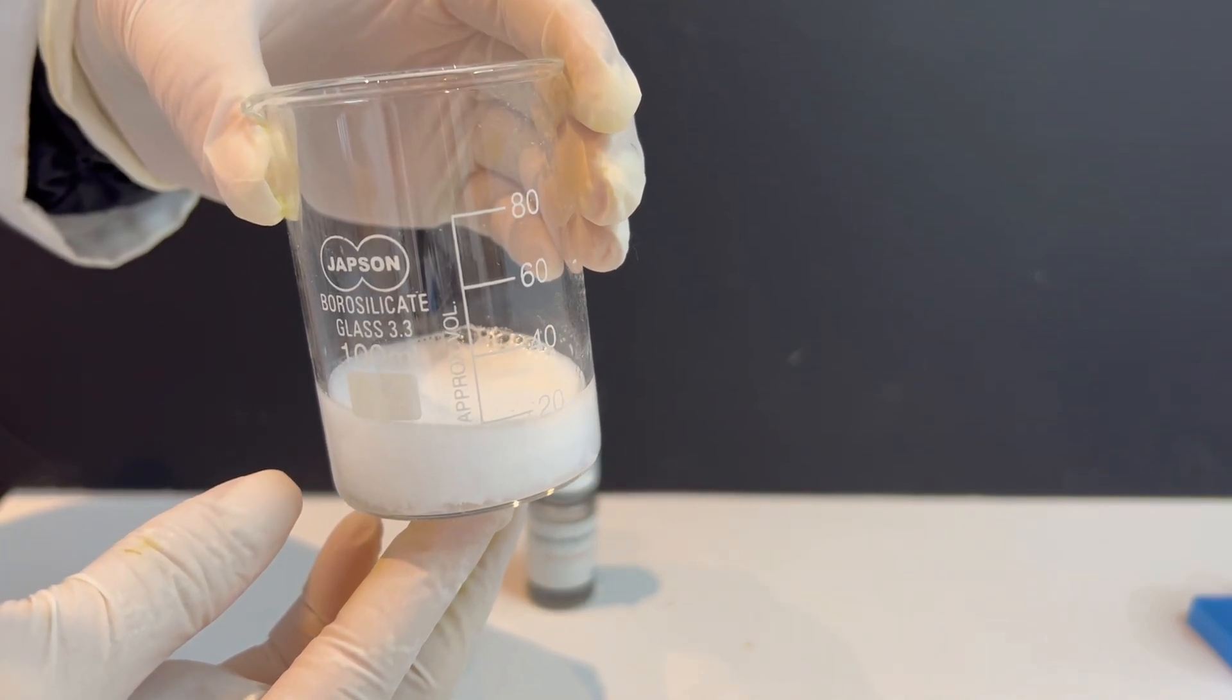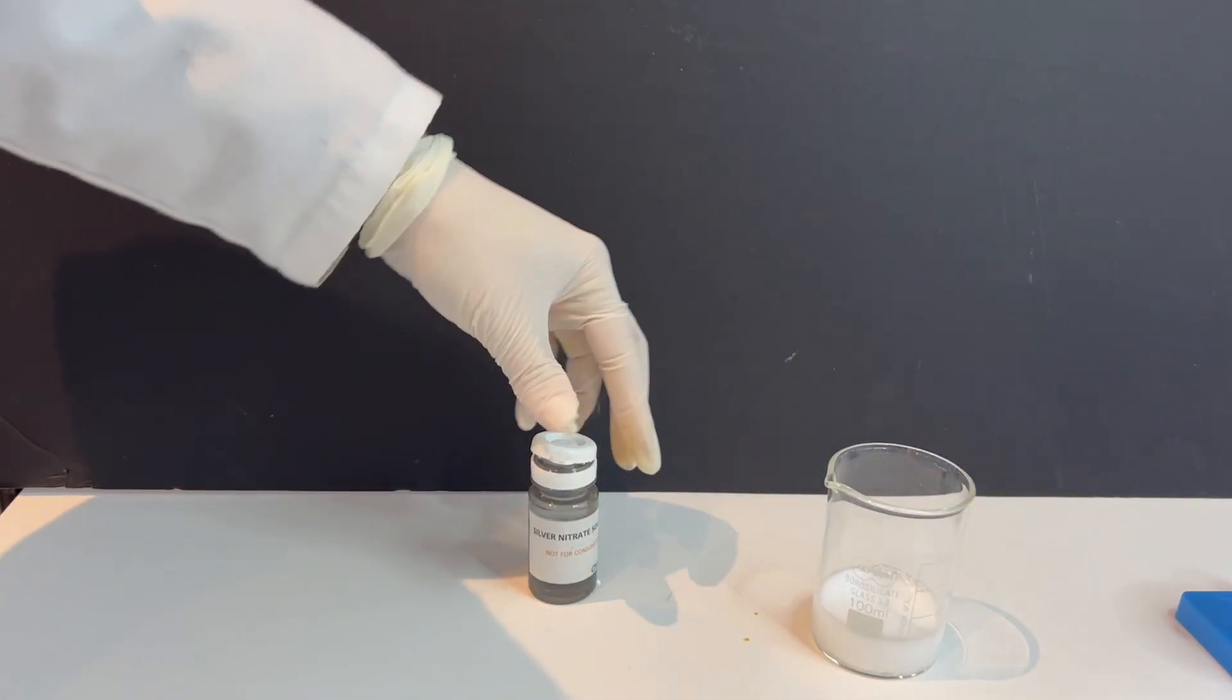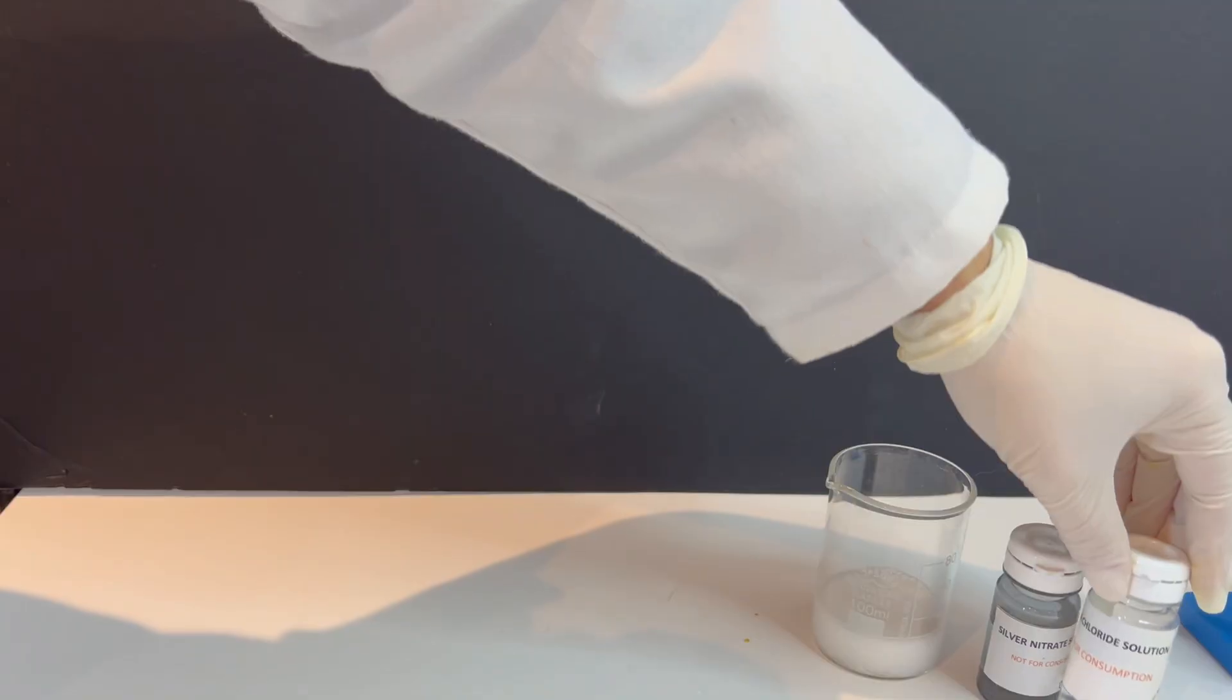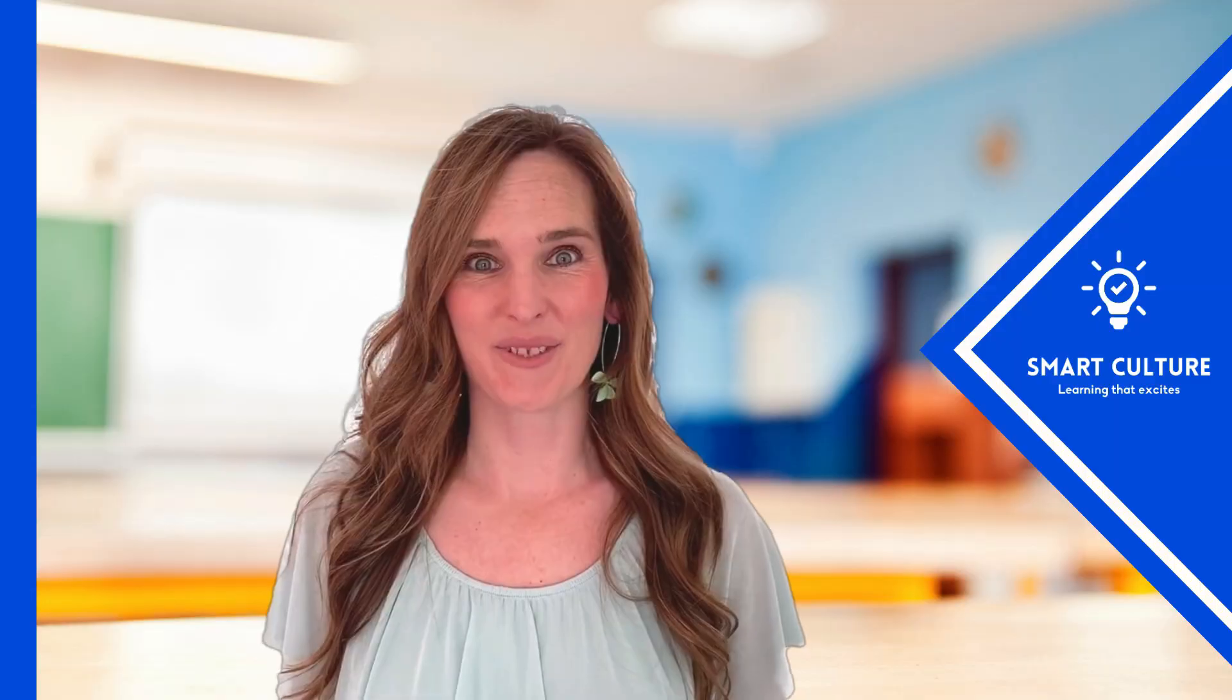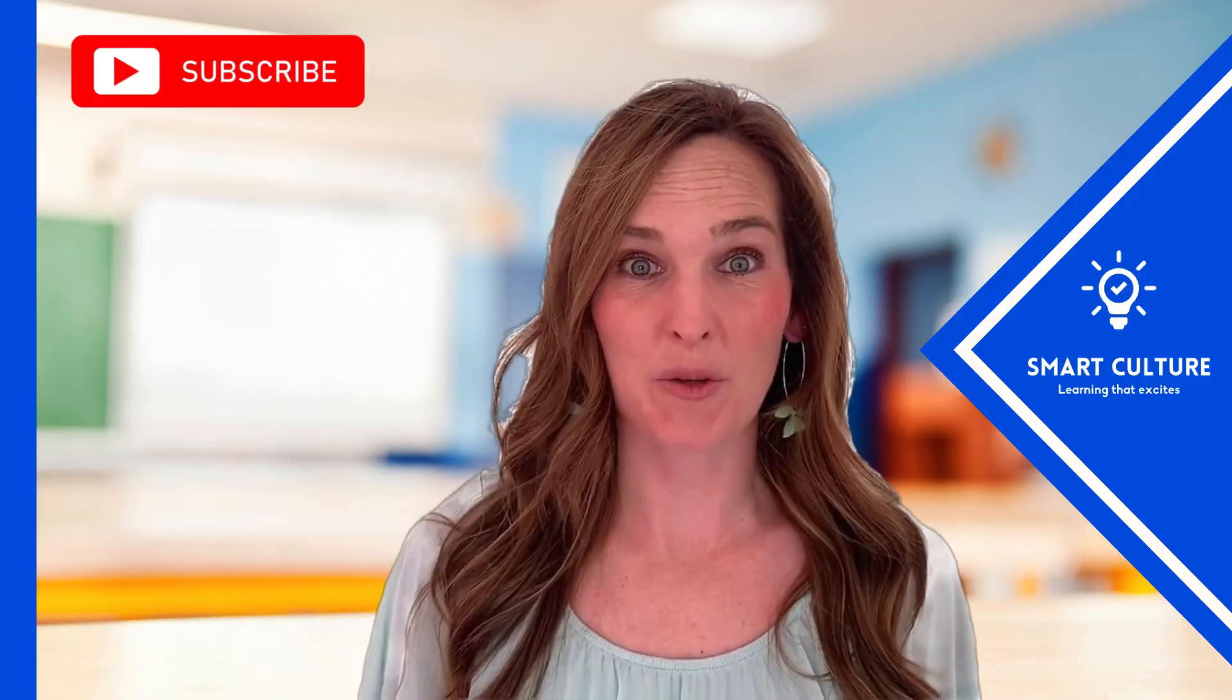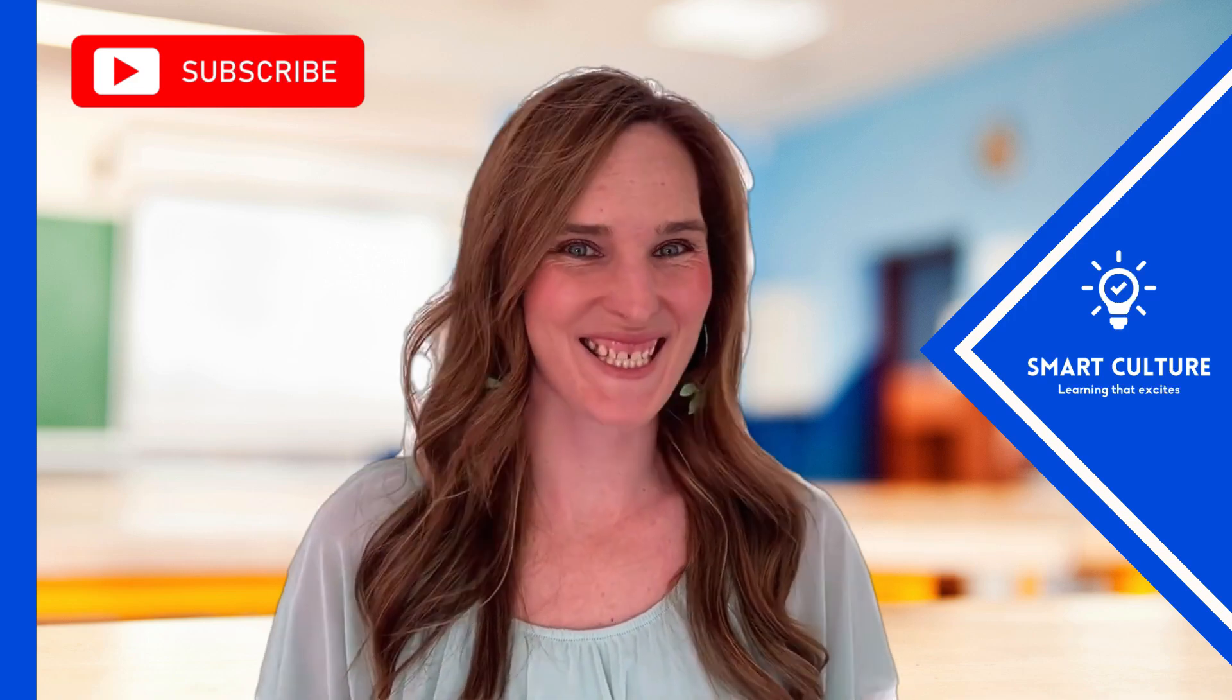This is a precipitation reaction. The silver ions and chloride ions combine to form solid silver chloride, which sinks to the bottom. And that's a wrap on today's fascinating journey through the world of knowledge. Don't forget to hit that subscribe button and join our ever-growing community of curious minds. We can't wait to embark on new educational adventures together.